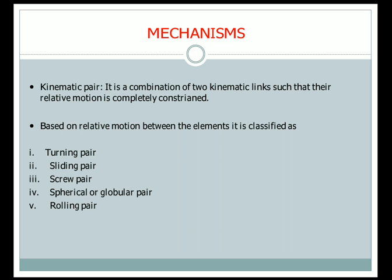There are different types of kinematic pairs. They are classified as turning pair, sliding pair, screw pair, spherical or globular pair, and rolling pair. We will see each one of them.